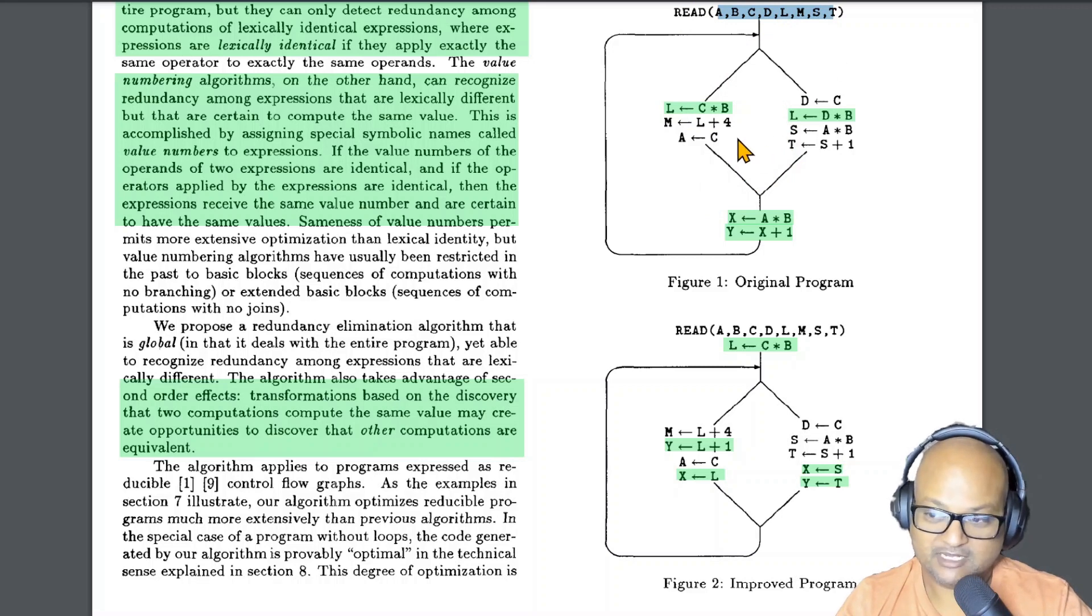Now if you look at it closely you can intuit several opportunities for optimization. The first one you'll notice is this computation of a into b that is assigned to x and you'll see that there are actually two optimizations that can be done over here. The first one is because of these various assignments. So you can see that a is assigned to c over here.